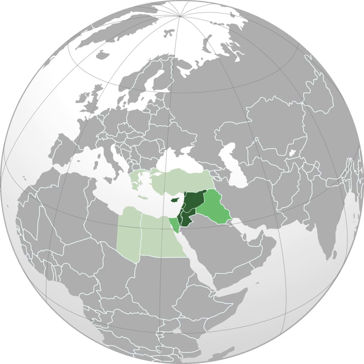The term Levant, which appeared in English in 1497, originally meant the east in general or "Mediterranean lands east of Italy". It is borrowed from the French Levant, meaning "rising", referring to the rising of the sun in the east, or the point where the sun rises. The phrase is ultimately from the Latin word levare, meaning "lift, raise".